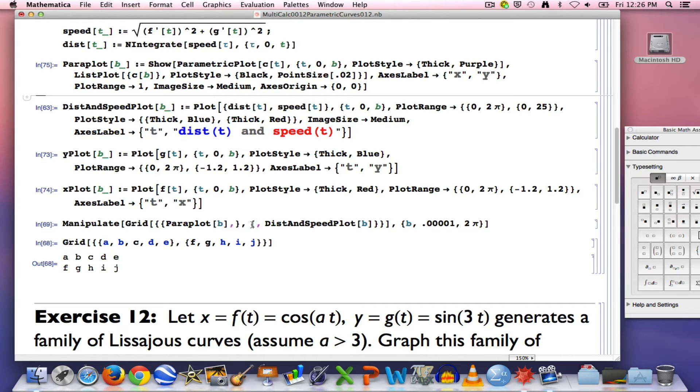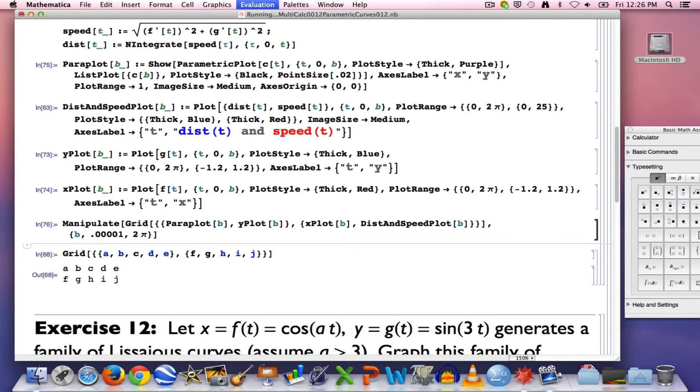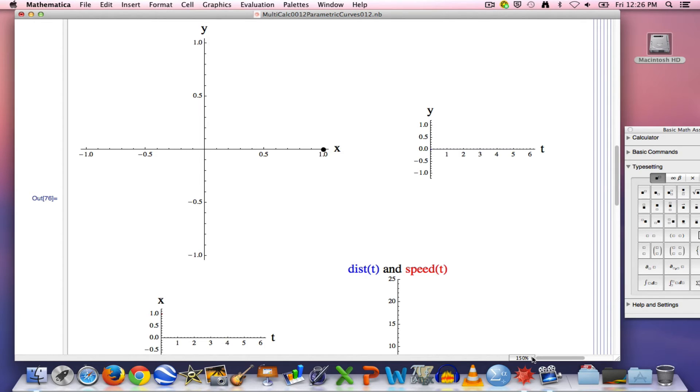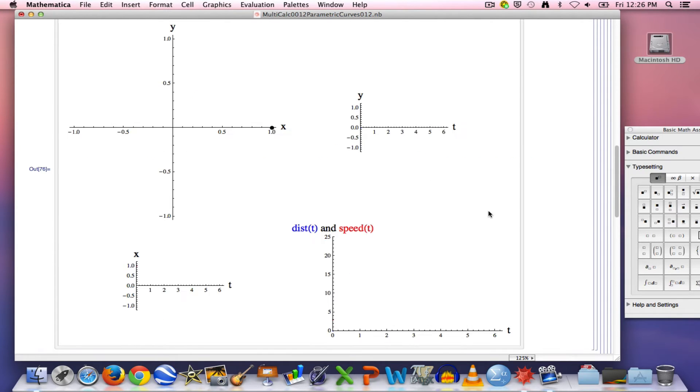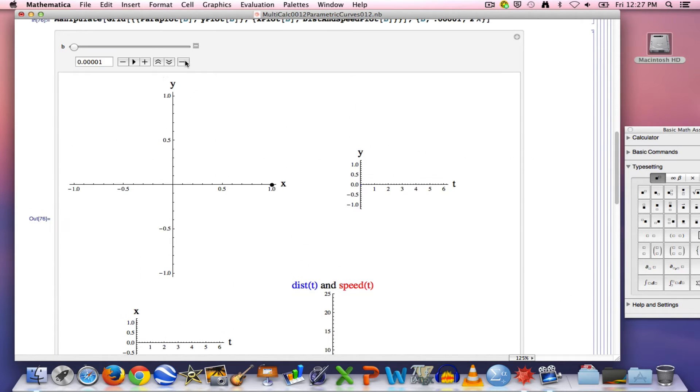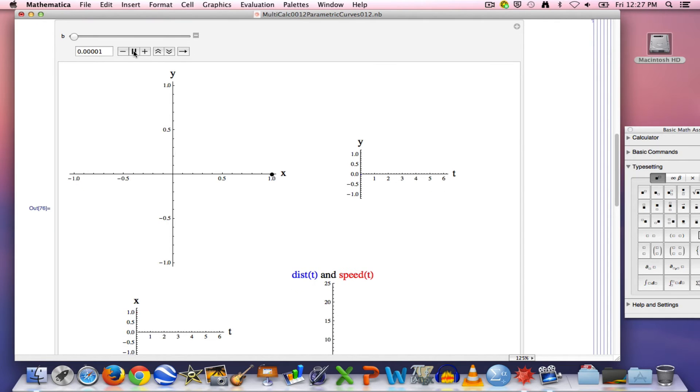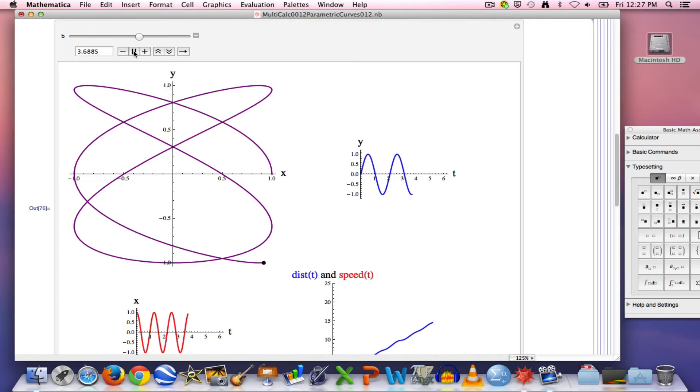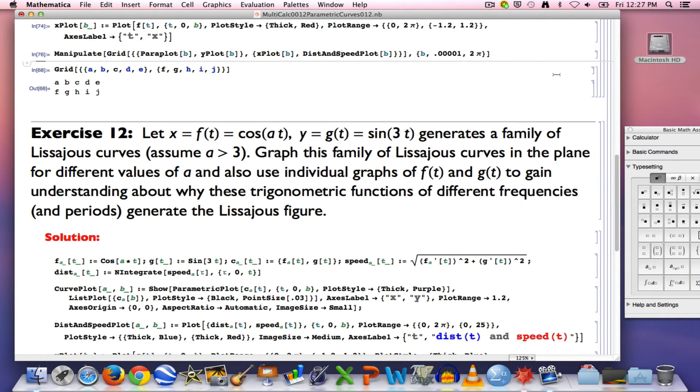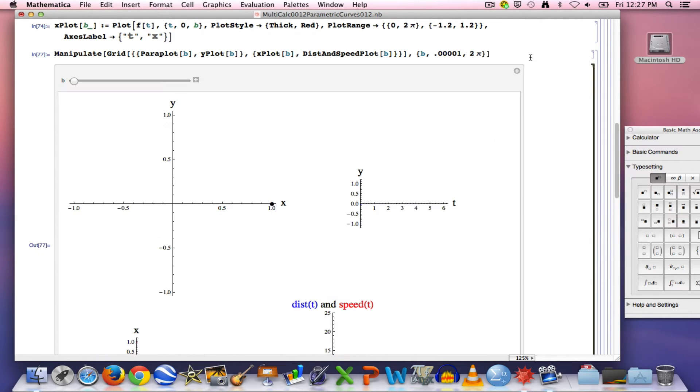And now I can go ahead and put the yplot and the xplot down in the grid here. I'll put the yplot in the upper right and the xplot in the lower left. Now we have a 2 by 2 matrix of plots that are all related to each other. The parametric curve again in the upper left. The graph of y is a function of t in the upper right. The graph of x is a function of t in the lower left. And the distance and speed graphs in the lower right.